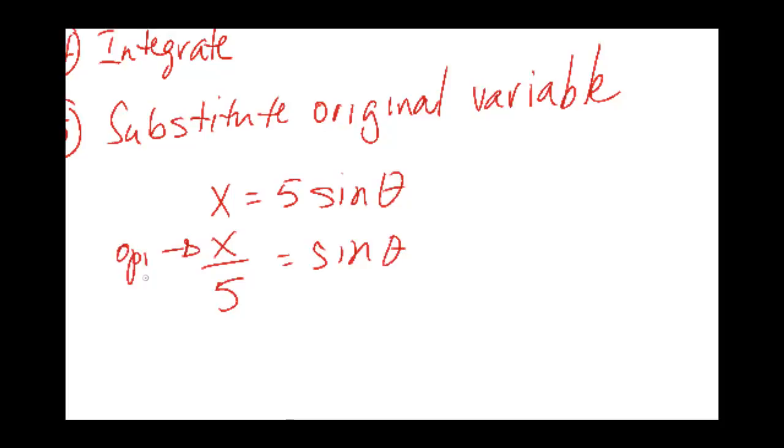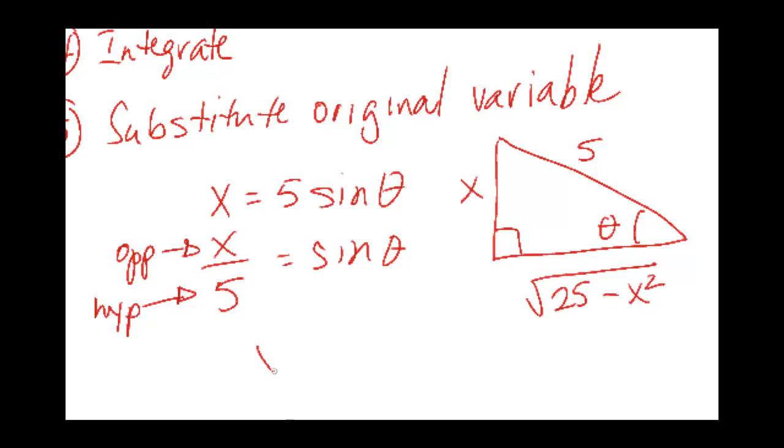So once we have that, we have a right triangle, here's our theta, the opposite is x, the hypotenuse is 5. And if you did it correctly, you do your Pythagorean Theorem. We have x squared plus our missing leg squared equals 5 squared which is 25. So the missing leg squared equals 25 minus x squared, square root both sides, and you get that missing leg. And if you did it correctly, this expression should be in your problem somewhere that you're substituting.